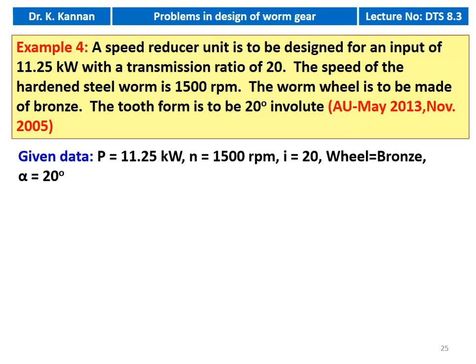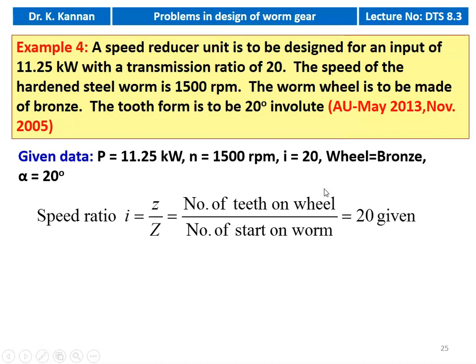We write down the given data. Power equal to 11.25 kW, speed of the worm is 1500 RPM, speed reduction ratio i equal to 20, the wheel is made of bronze, and the pressure angle alpha is 20 degrees. The speed ratio for worm gear drive i equals number of teeth on the wheel divided by number of starts of the worm, which is 20.